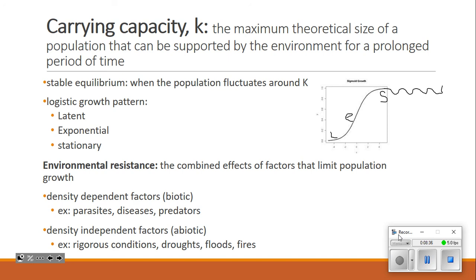K is the maximum theoretical size of a population that can be supported by the environment for a prolonged period of time. So carrying capacity is not a growth rate. Carrying capacity is a population size. Biotic potential is a growth rate. How fast can this population be growing? So if we were to take a look at a graph, what we would see is that we end up with something called stable equilibrium.